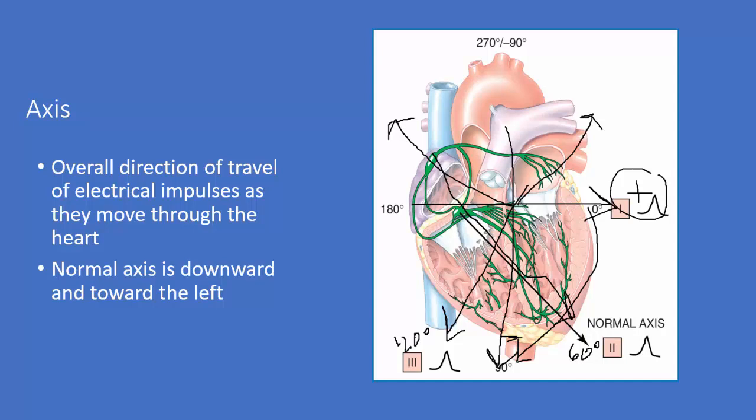Upright complexes in leads one, two, and three indicate forces going toward all three leads. Impulses going towards a positive electrode make a positive deflection. One way you can get an idea of the axis is by looking at the QRS in a couple of different leads.